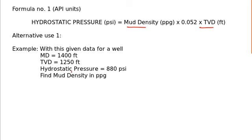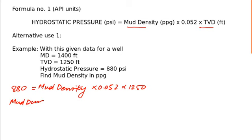The quantities given suggest that you have to use formula number one, but there will be some manipulation. First, I will place the values directly into formula number one. You have hydrostatic pressure 880 on the left hand side. Right hand side you have mud density, which is not known, so simply write mud density multiplied by constant factor 0.052 multiplied by TVD 1250. To find mud density, keep mud density on left hand side and take other quantities on right hand side: 880 divided by the product of 0.052 and 1250.